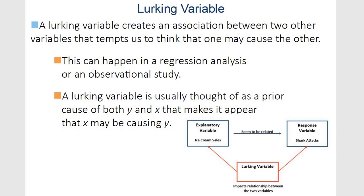A lurking variable creates an association that makes us think there's a relationship. For example, ice cream sales seem to be related to shark attacks — the more ice cream sold, the more shark attacks. That seems to be the relationship in an observational study. But the lurking variable here is actually the weather. Weather is causing both the increase in ice cream sales and the increase in shark attacks. Ice cream and shark attacks have nothing to do with each other, but it may appear that there's a relationship.